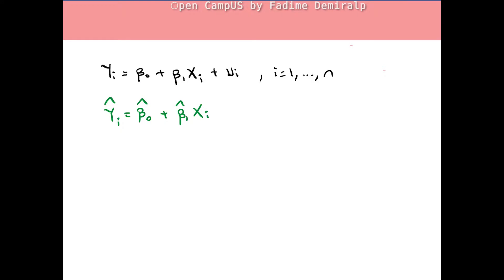These estimators are calculated using a random sample. They take different values from one sample to another — they are random variables with a probability distribution called the sampling distribution. Their sampling distributions summarize the probability of these different values. I highly recommend watching chapter 3 part 3, where we discussed the sampling distribution of the sample mean, which was approximately normal due to the central limit theorem.